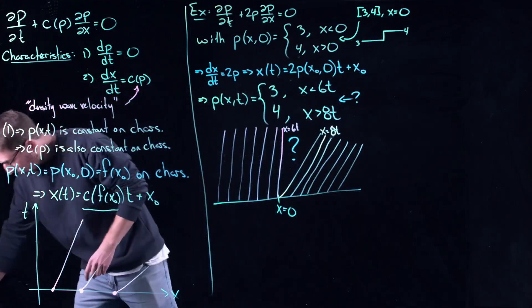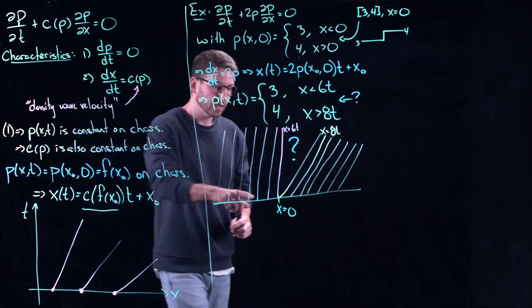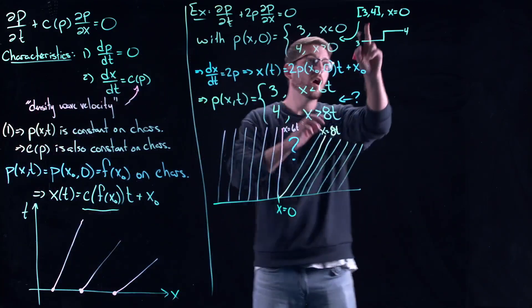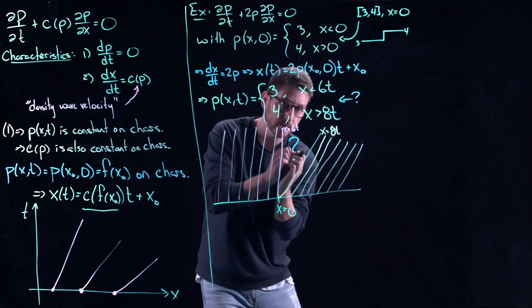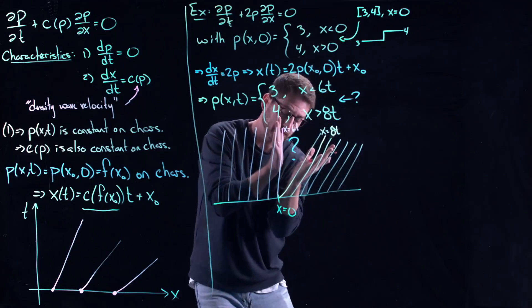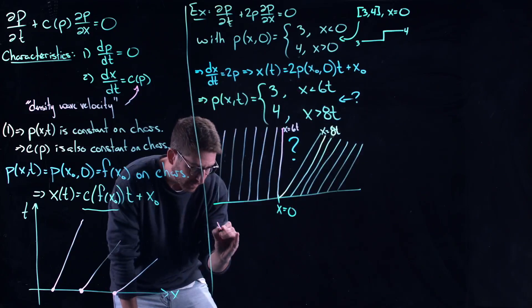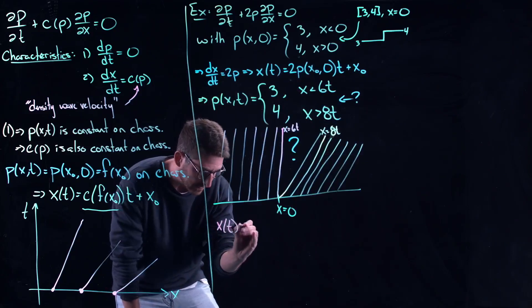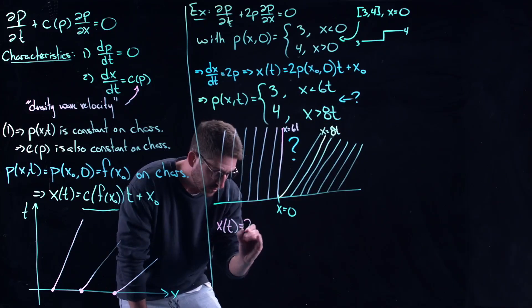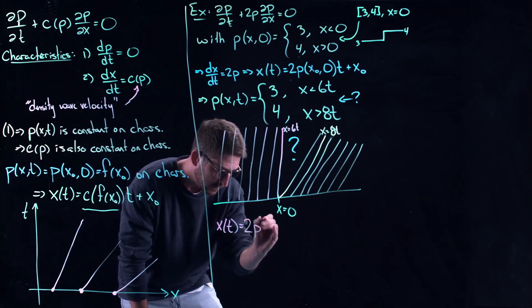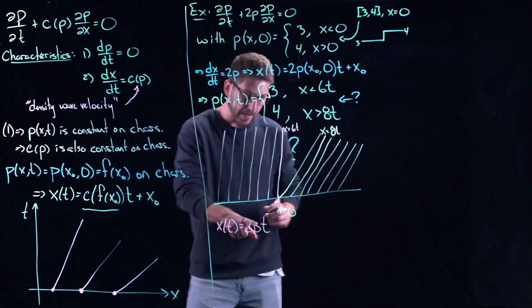And so essentially what happens there is that at x equal to 0, all of the values in this set start to fan out. And essentially you get all of these characteristics.